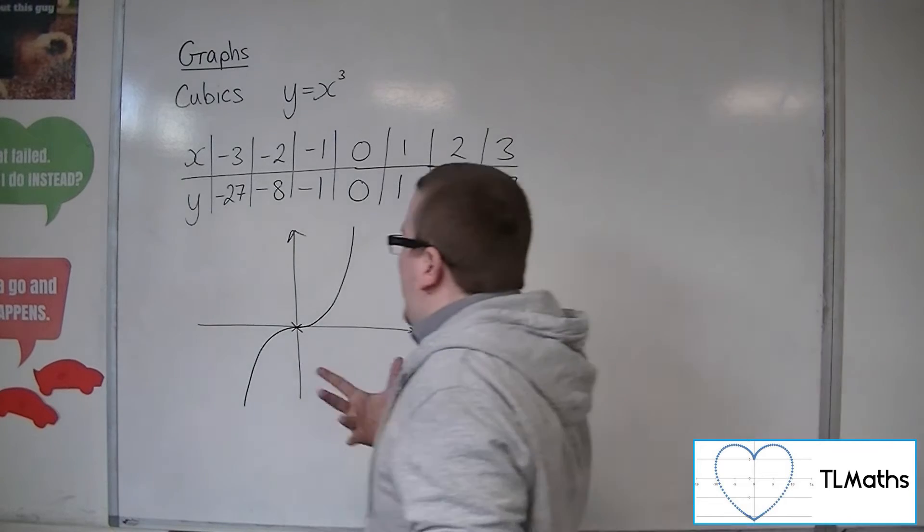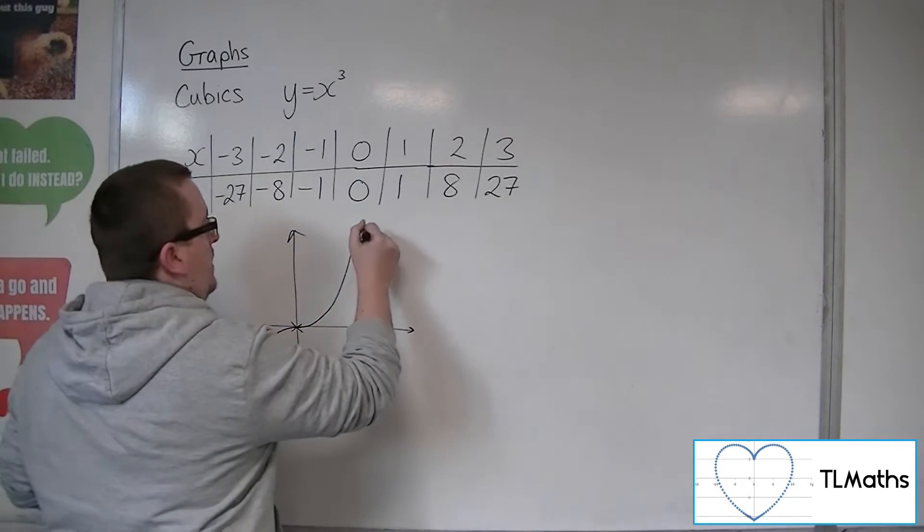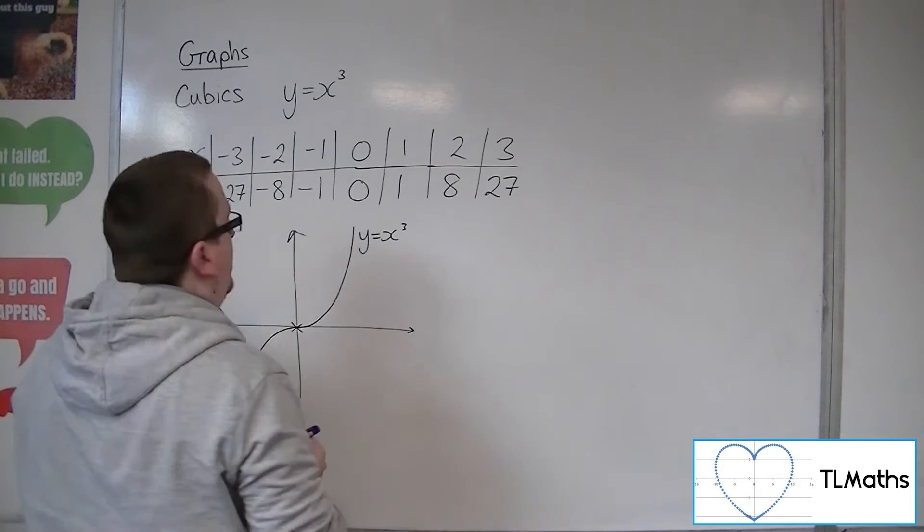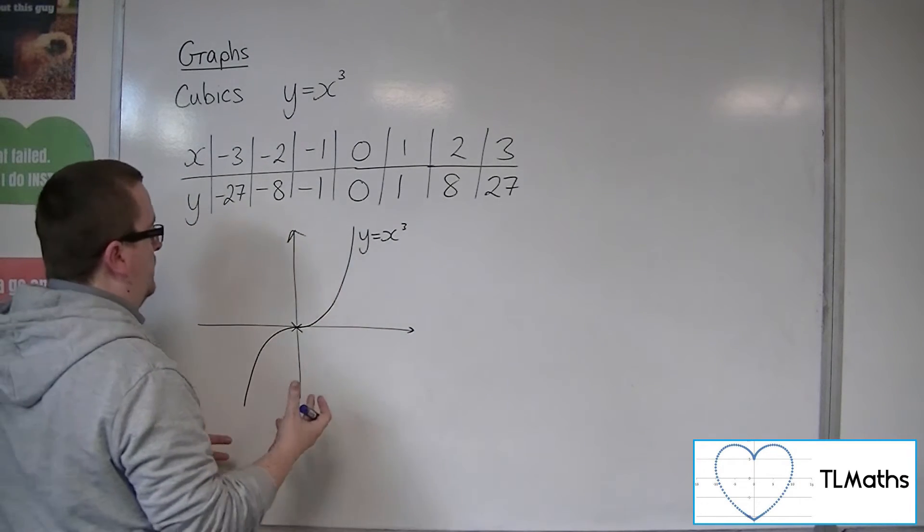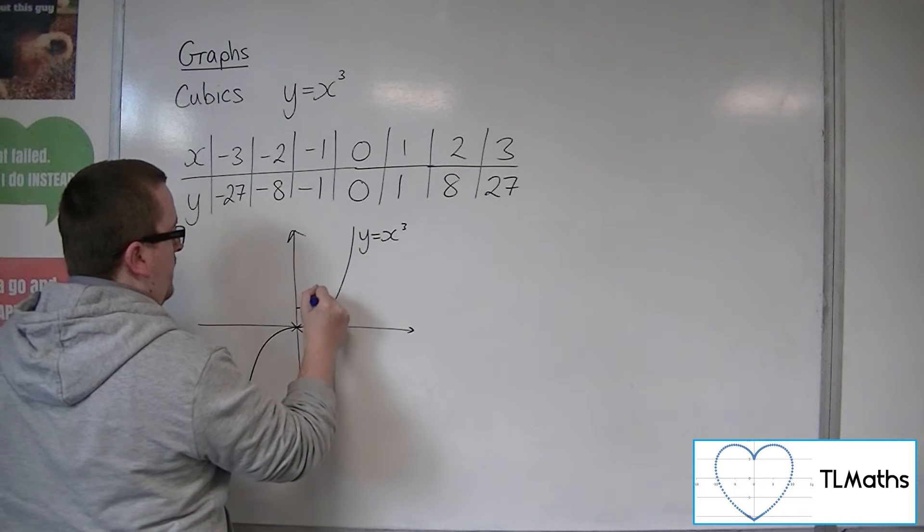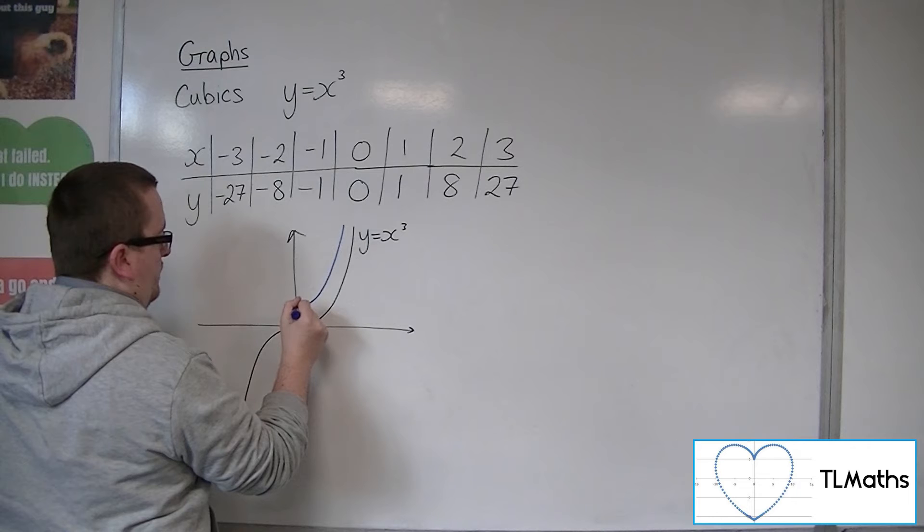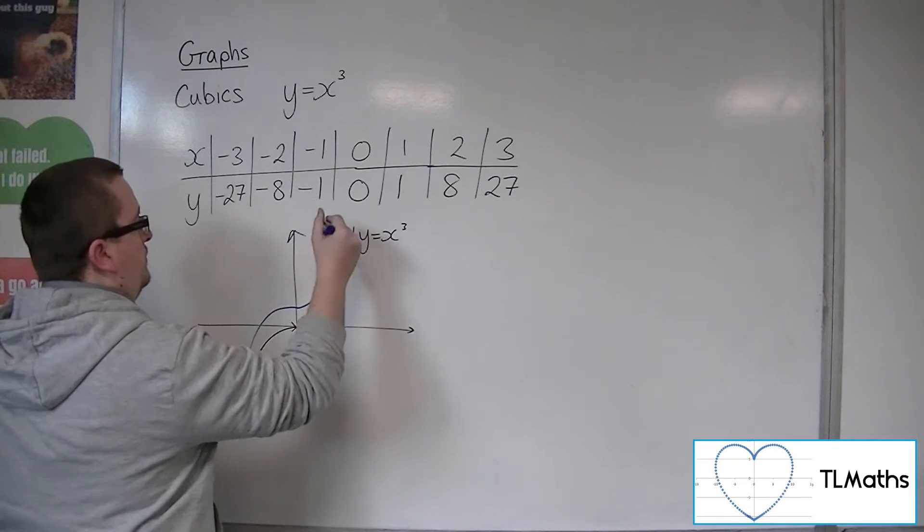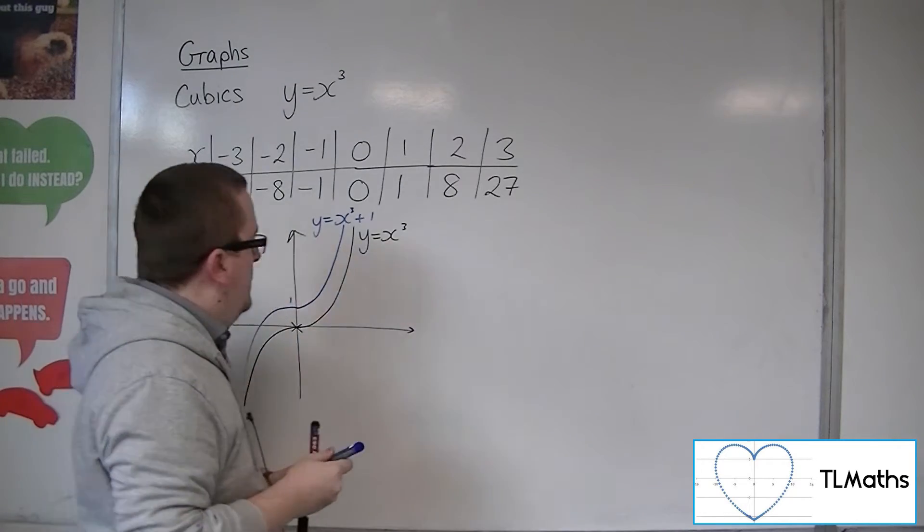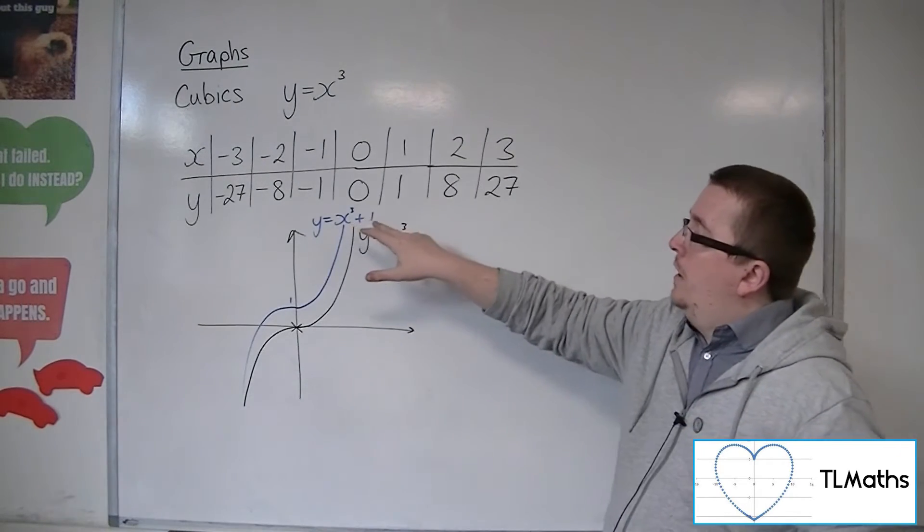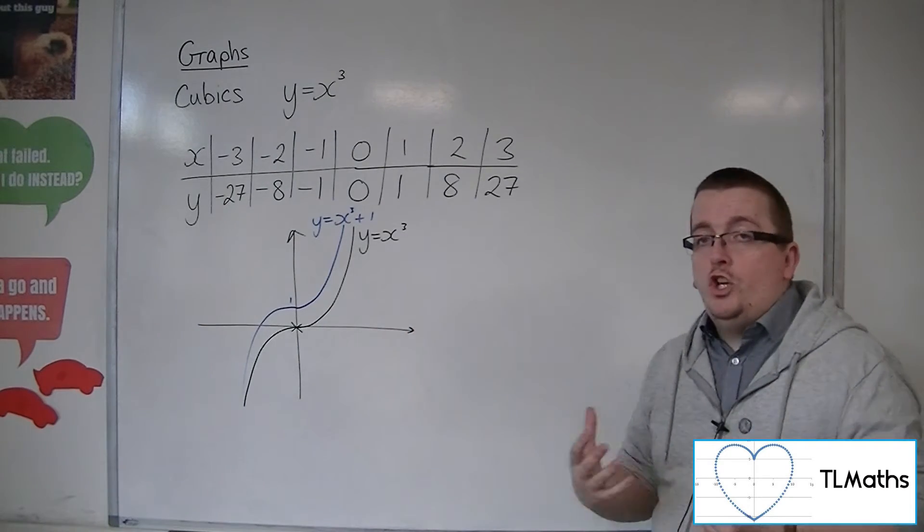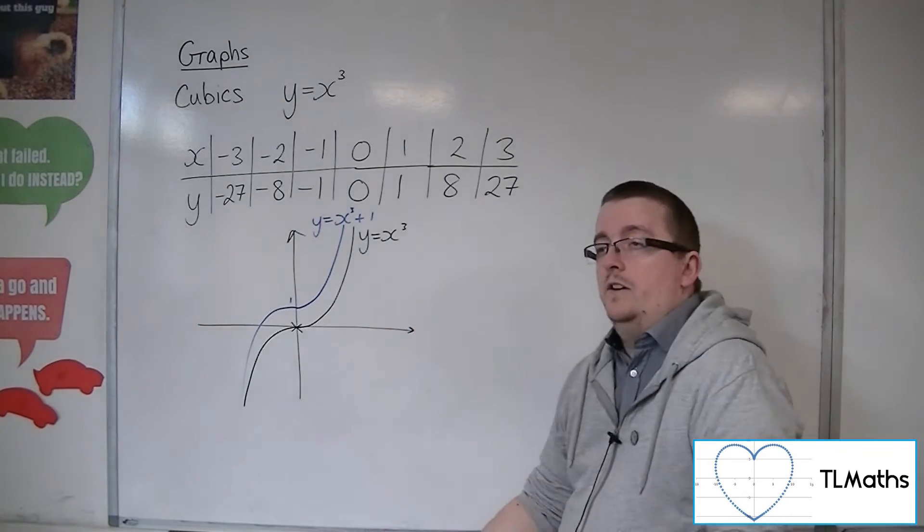Now, if you just added on an extra value to it, so let's say we had y is equal to x cubed plus 1, for example. So y equals x cubed plus 1 is just a curve that is a translation of that one. It's just moved up one place. So just adding a constant value onto the end of the cubic doesn't really change its shape at all. All it does is it translates the curve up and down.